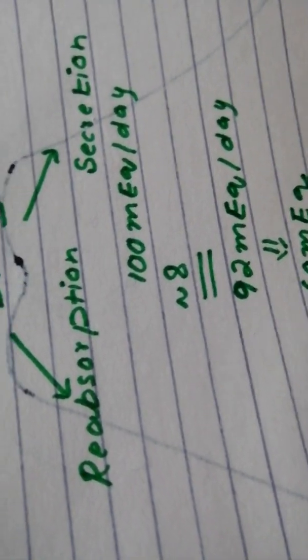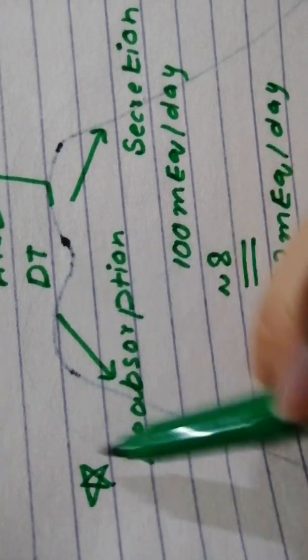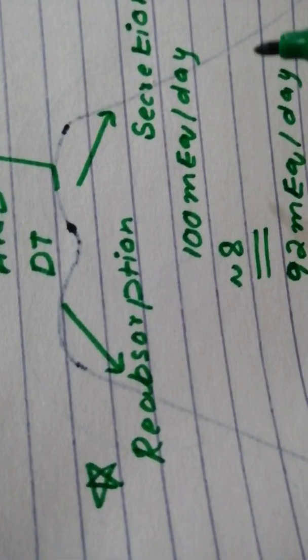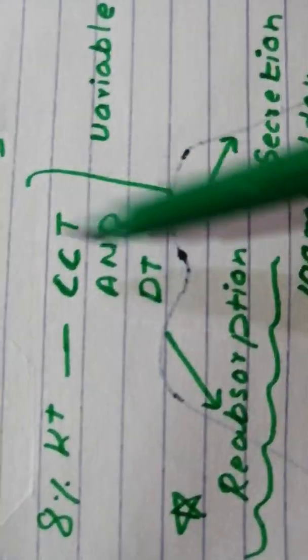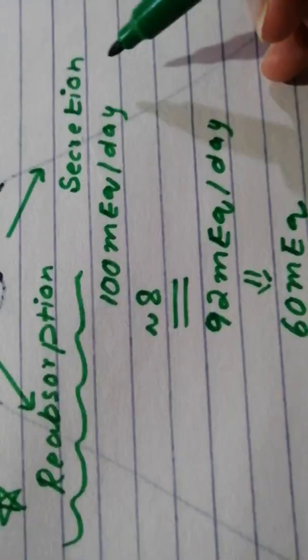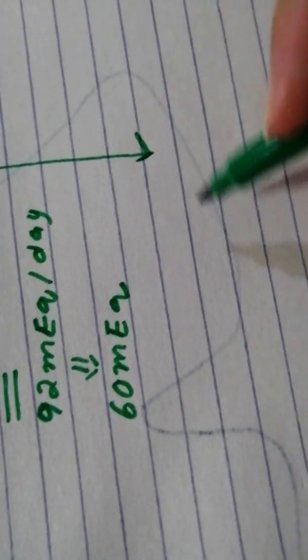Normally you have 100 milliequivalents per day potassium intake. About 8% is removed in urine. The remaining 92 milliequivalents needs to be removed as well through secretion. Which cells do secretion in these areas? Principal cells.